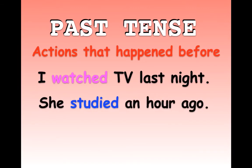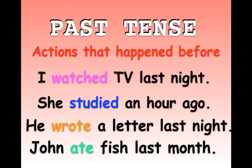For example: I watched TV last night. She studied an hour ago. He wrote a letter last night. John ate fish last month. Notice all of these either use '-ed' or they change the spelling of the verb. These are examples of regular and irregular past tense verbs.